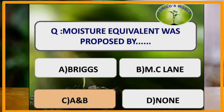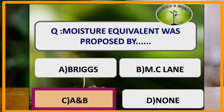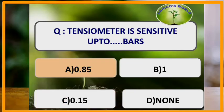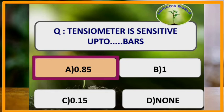At hygroscopic coefficient, water occurs as both vapor and gas form. Moisture equivalent was proposed by the scientists Briggs and McLane. Tensiometer was invented by the scientists Richards and Gardner. Tensiometer is sensitive up to 0.85 bars and is also called an aerometer.